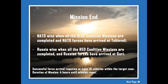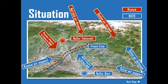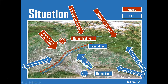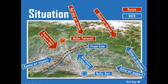NATO wins when all blue coalition missions are completed and NATO forces have arrived at Tskhinvali Valley. As the infantry moves forward, you need to use your helicopters to weaken the red defenses and make holes in their lines so the blue forces can progress. Once you get into that zone you have completed half of the assignment.